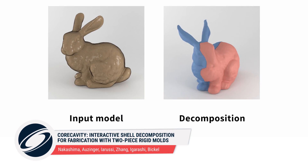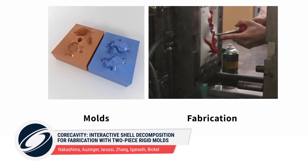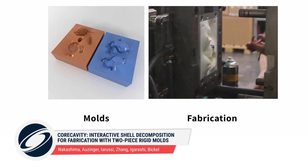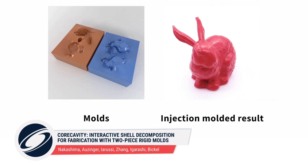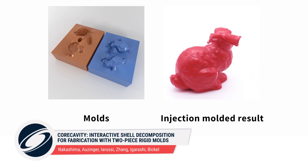Given an input model like this bunny, a new process decomposes it into parts that can be cast by injection molding, making replication fast and cost efficient.